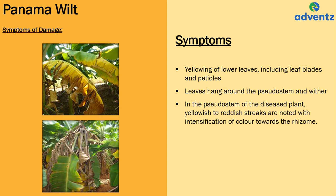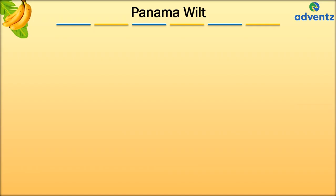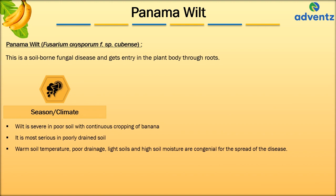The season or climate that favours Panama Wilt: wilt is severe in poor soils with continuous cropping of banana. Warm soil temperature, poor drainage, light soils, and high soil moisture are conducive for the spread of the disease, and it is more serious in poorly drained soils.